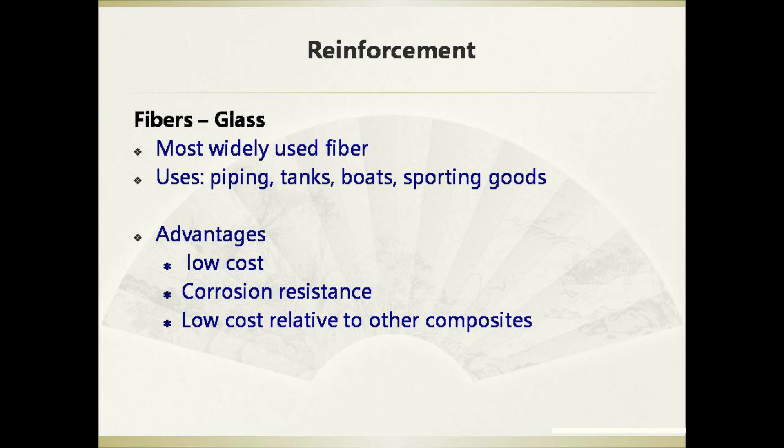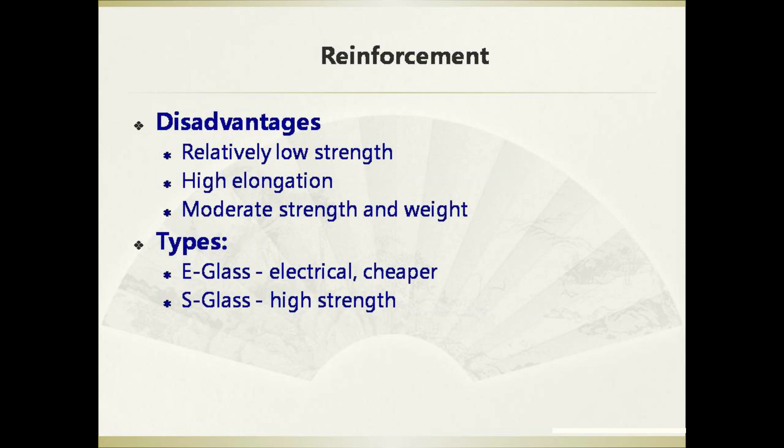Glass is the most widely used fiber for reinforcement of composites. It is usually applied in piping, tanks, boats, and sporting goods. The advantages of glass are low cost relative to other composites and high corrosion resistance. However, the disadvantages are relatively low strength, high elongation, and moderate strength-to-weight ratio. Glass can be divided into E-glass and S-glass. E-glass is for electrical use and is cheaper than S-glass, while S-glass is famous for its high strength.